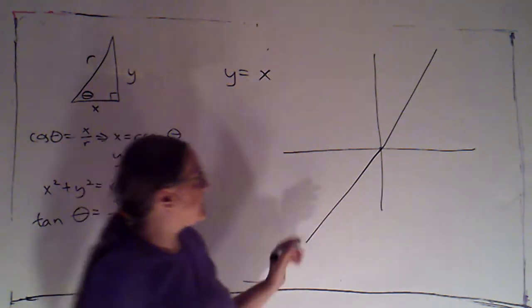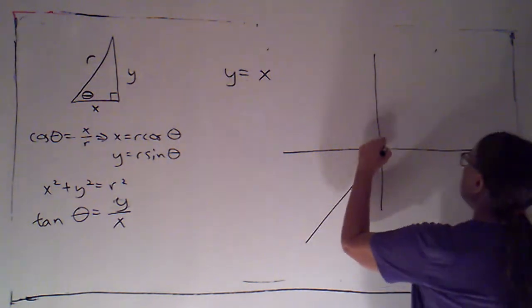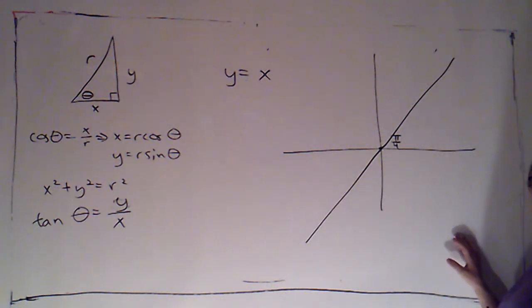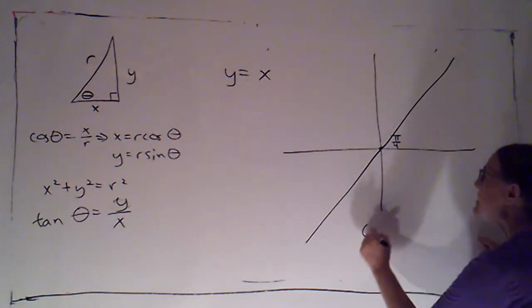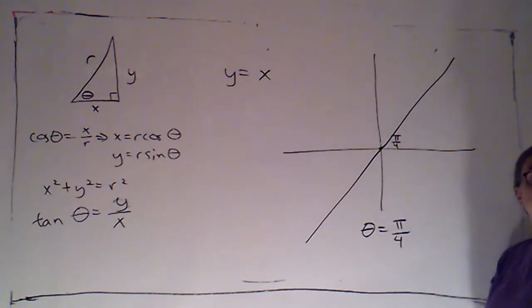Because I can see, this is a line through the origin. I didn't draw it very well to scale, but it's making an angle of pi over 4 with the positive x axis, which is our polar axis. So an equation in polar coordinates would be theta is pi over 4.